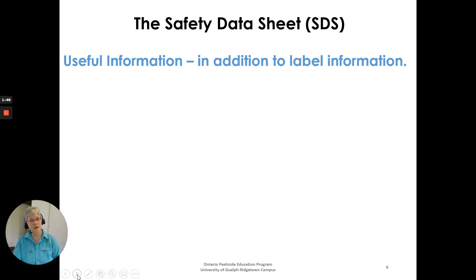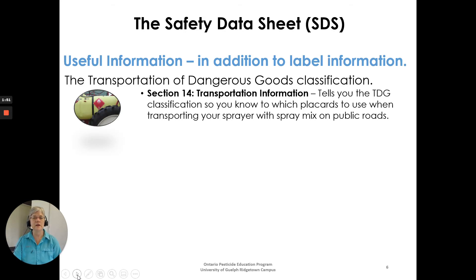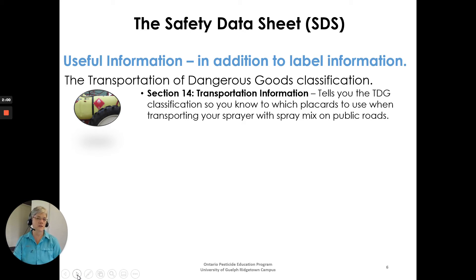What useful information would you find in addition to the label on a Safety Data Sheet? First, the Transportation of Dangerous Goods classification. That's not on the specific product label. Going to Section 14, Transportation Information of a Safety Data Sheet, tells you the Transportation Dangerous Goods classification, so you know which placards to use when transporting your sprayer with spray mix on public roads.